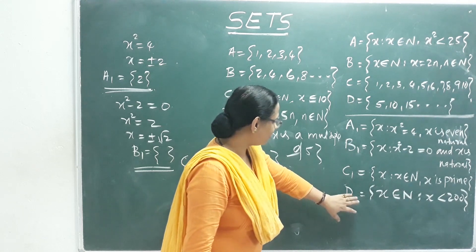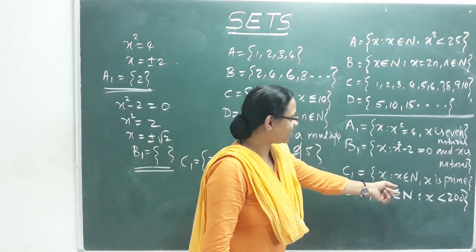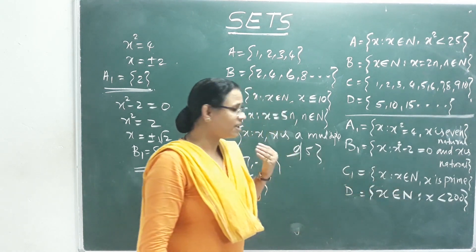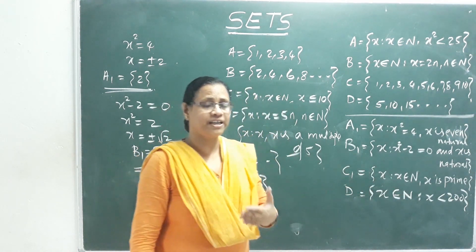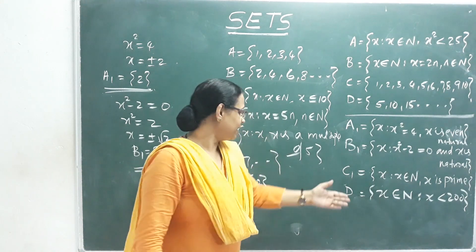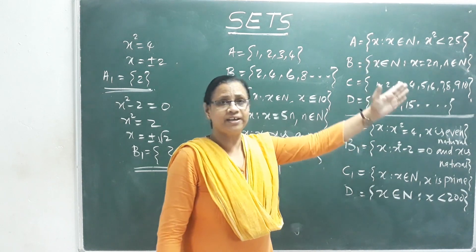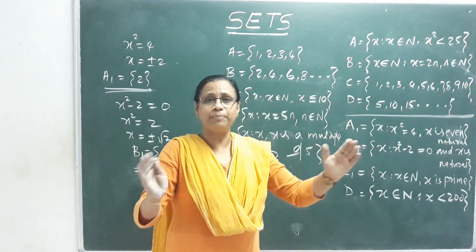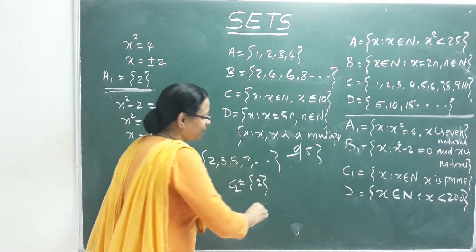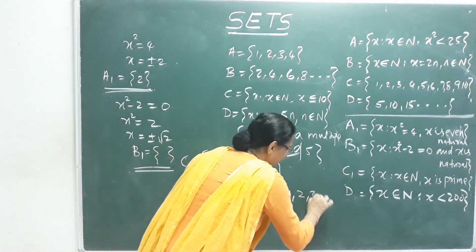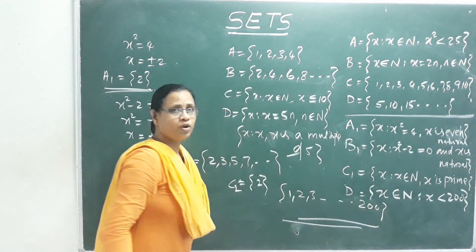Last example: D = {x ∈ N : x < 200}. Starting from 1, the natural numbers go 1, 2, 3, 4, 5... up to 199. This gives us a finite set with cardinality 199, or we write D = {1, 2, 3, ..., 199}.